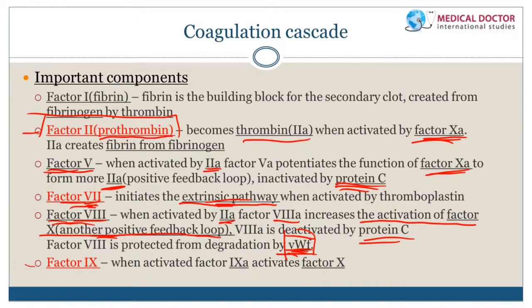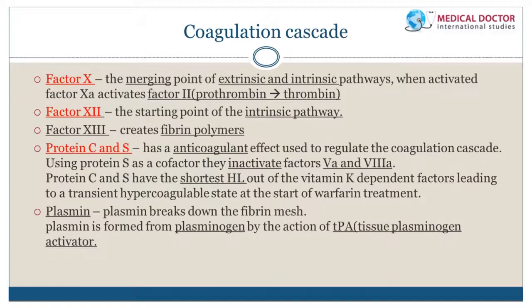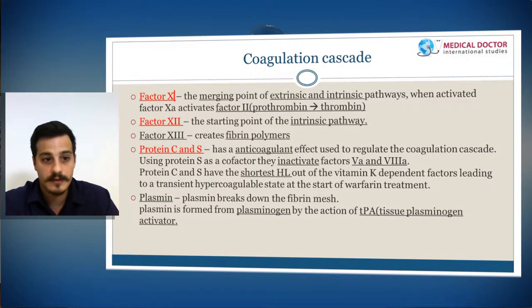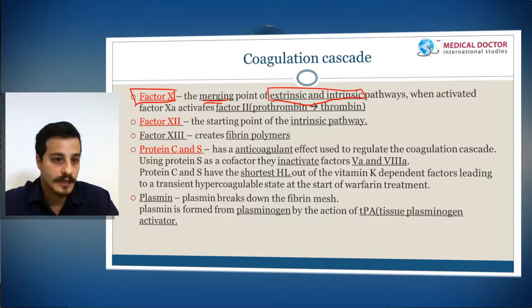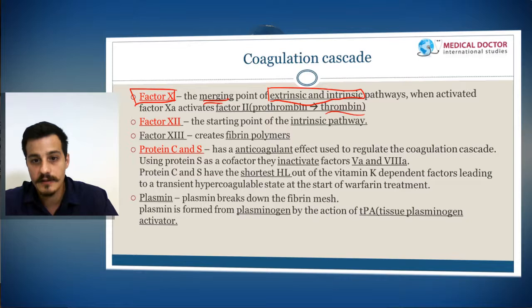Factor 9 is vitamin K dependent. When activated, it causes activation of factor 10, leading to activated factor 2. Factor 10 is also vitamin K dependent and is the merging point between the extrinsic and intrinsic pathways — the beginning of the common pathway. Its function when activated is to convert factor 2 from prothrombin into active thrombin.